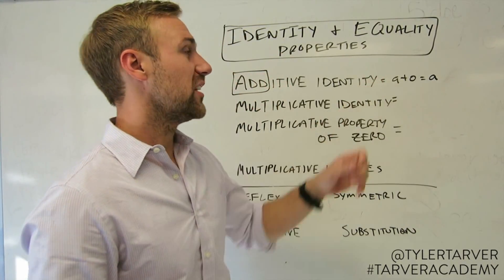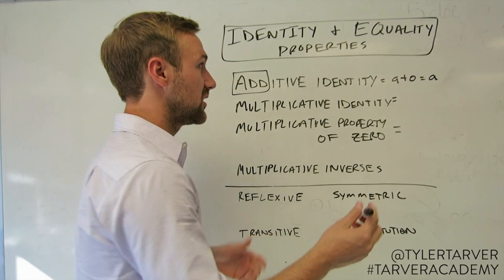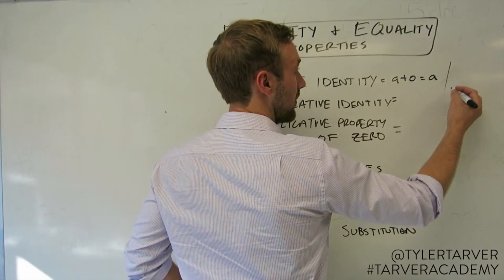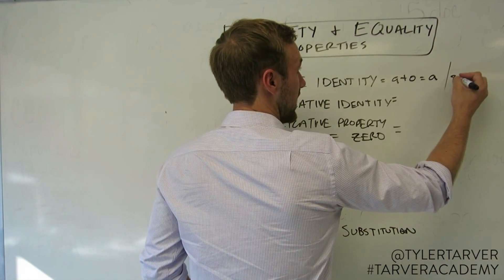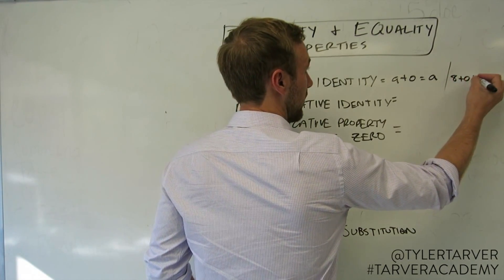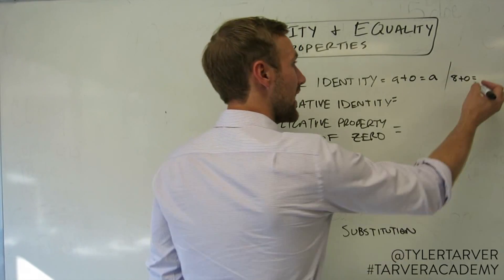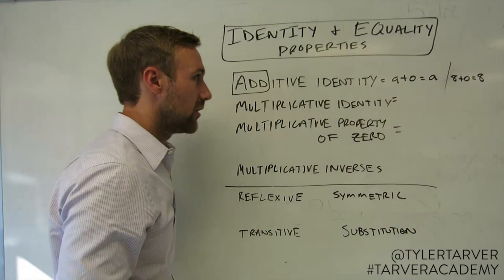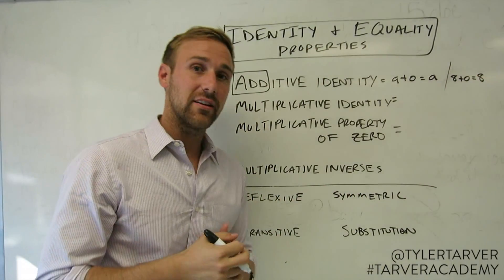So this allows us to say this is true. For instance, say you said eight plus zero — what's that going to equal? Eight. Correct. Great work. And that's the additive identity property.